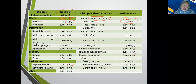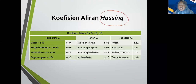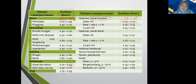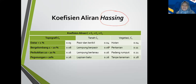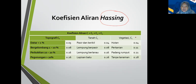Ini koefisien secara umum. Kemudian ada juga metode Hasing — ini nama orang, dia merumuskan sendiri. Kalau yang umum tadi hanya berdasarkan tutupan lahannya saja, masih umum. Sedangkan Hasing ini ada tiga komponen: koefisien rata-rata CT (topografi), CS (jenis tanah), dan CP (vegetasi atau tumbuhan).